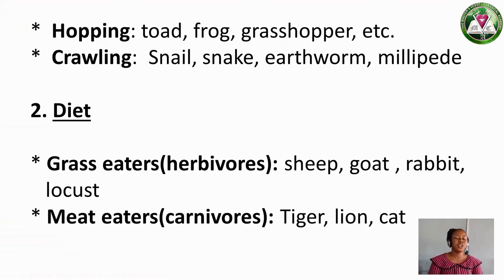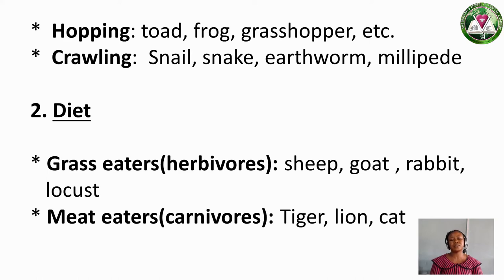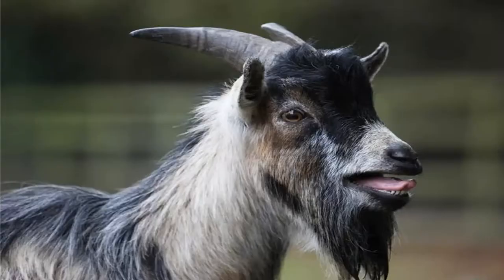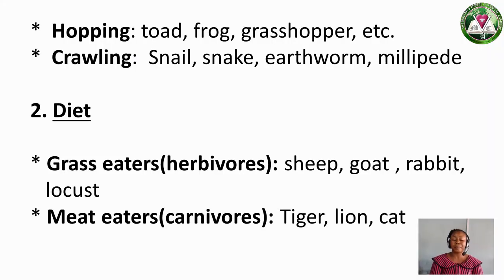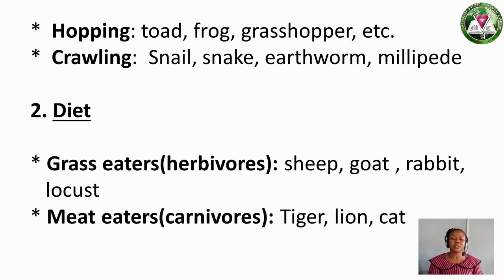Number two is Diet. Animals can be grouped according to the food they eat. The first group is Grass Eaters — we call them Herbivorous animals. The ones that eat grass alone include sheep, goat, rabbit, and locust. In the olden days, locust was eaten as meat by our grandparents.